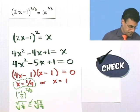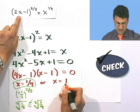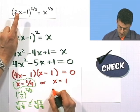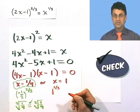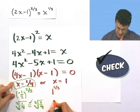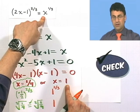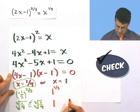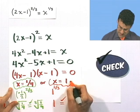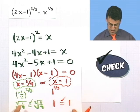Now checking x equals 1: plugging into the original, 2 times 1 is 2, and 2 minus 1 is 1. So I have 1 to the 2/3 power — that's 1 squared is 1, and the cube root of 1 is still 1. On the right side, 1 to the 1/3 power is the cube root of 1, which is also 1. 1 equals 1 — this checks. So we have two solutions: x equals 1 and x equals 1/4, and we're sure because we checked them both.